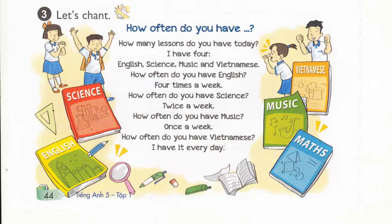Page 44, Activity 3. Let's chant. How often do you have? One, two, three, four. How many lessons do you have today? I have four: English, Science, Music, and Vietnamese. How often do you have English? Four times a week. How often do you have Science? Twice a week. How often do you have Music? Once a week. How often do you have Vietnamese? I have it every day.